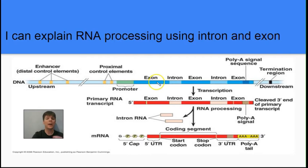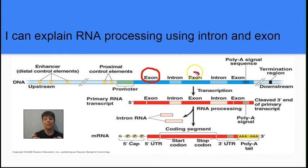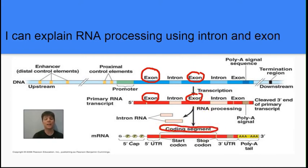Our next learning target is to explain RNA processing using the terms intron and exon. Originally we have a DNA molecule that is transcribed to produce RNA. Within the transcribed portion of a DNA gene, there are regions called exons and regions called introns. An exon — the exciting part of the DNA — leads to messenger RNA that is actually used in the coding segment, providing information that puts amino acids into a protein. The intron sequences are spliced out of the primary RNA transcript — they are cut out by something called a spliceosome.